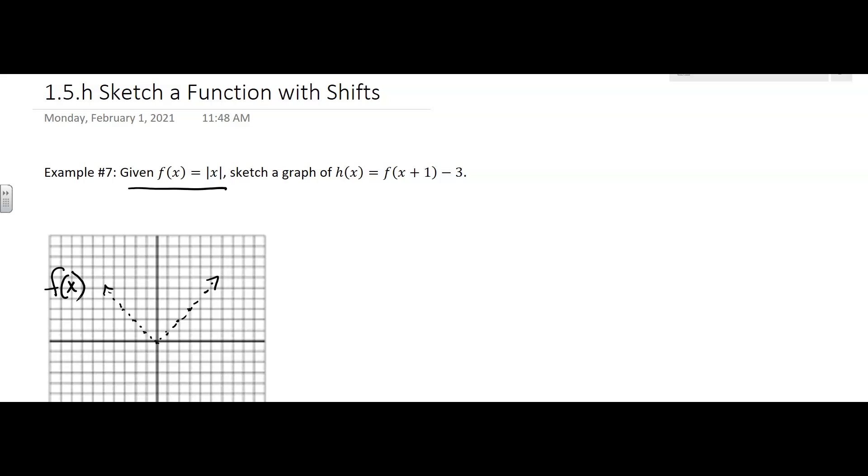Now we want to graph h of x. So this is the one that we're going to graph. And we look at what it says over here, it says you're going to have a shift. Now what kind of shift is that? That's a horizontal shift and it's going to shift to the left. So it's going to shift left one unit.